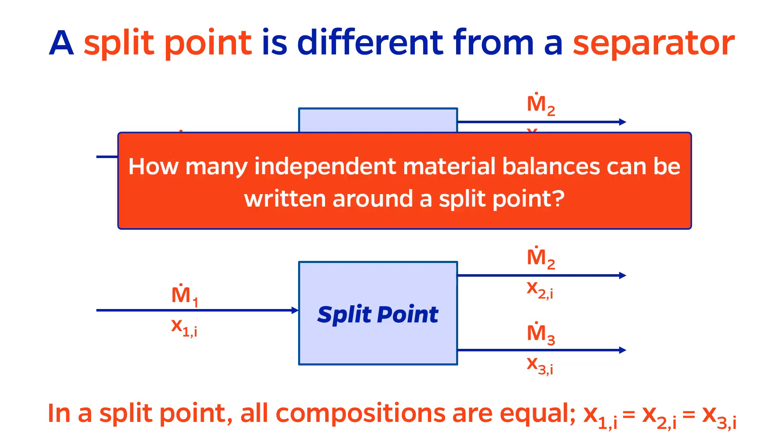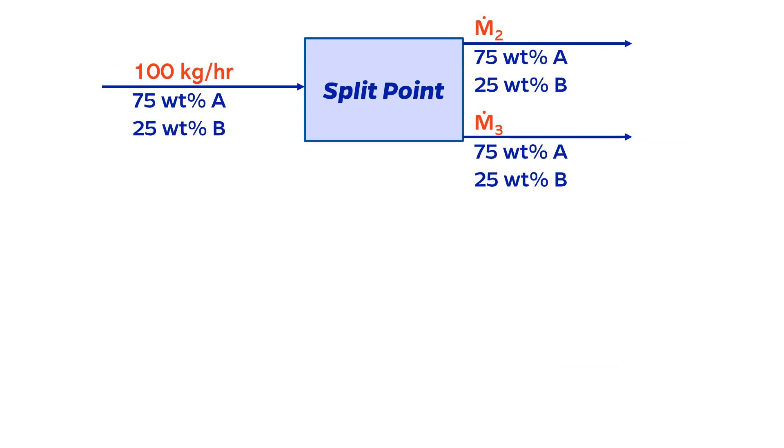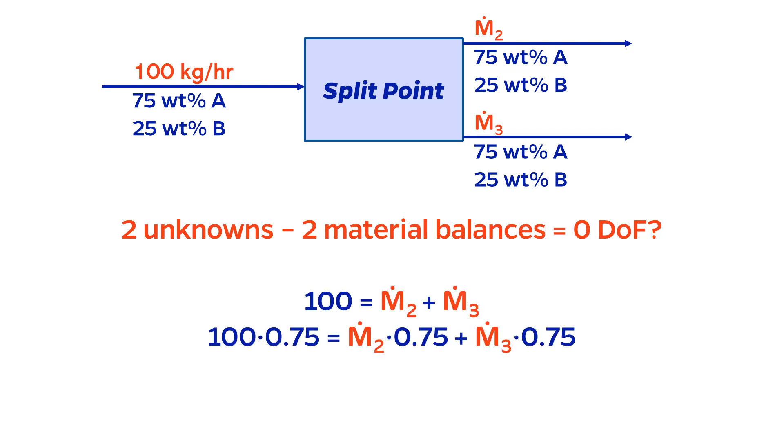This has some rather interesting implications, particularly when it comes to the number of independent material balances that you can write around a split point. Take this example where we have two components in a 75%-25% composition in all streams. From the looks of things, we have two unknown flow rate variables, and presumably two independent material balances, since there are two components.